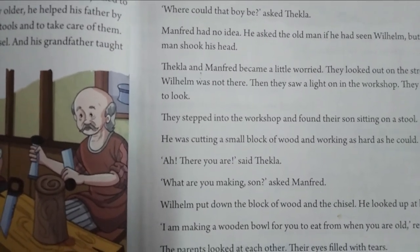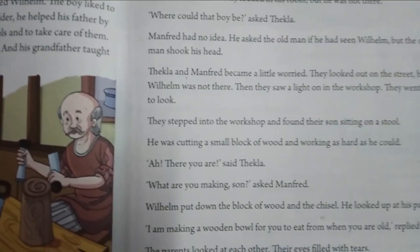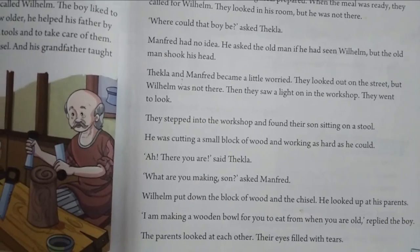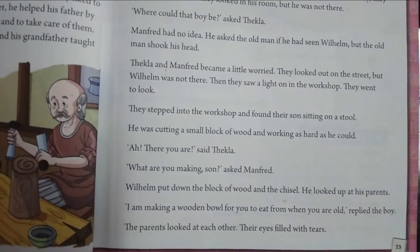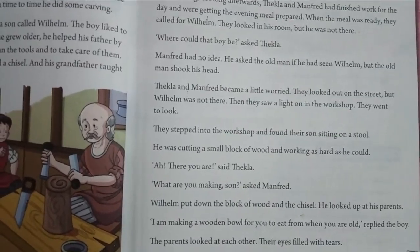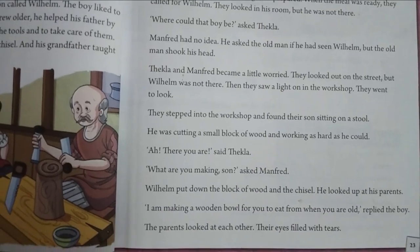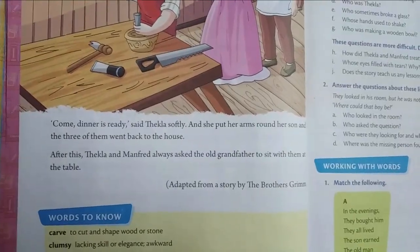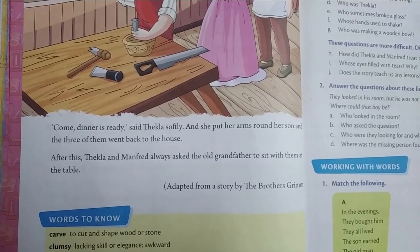'Oh, there you are!' said Tekla. 'What are you making, son?' asked Manfred. Wilhelm put down the block of wood and the chisel and looked up at his parents. 'I'm making a wooden bowl for you to eat from when you're old,' replied the boy. The parents looked at each other — their eyes filled with tears. Tekla softly called them to dinner, put her arms around her son, and the three of them went back to the house.